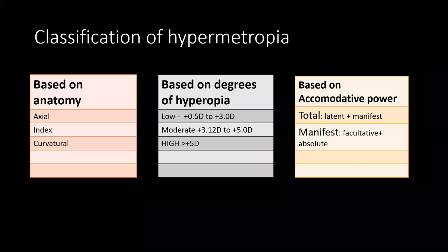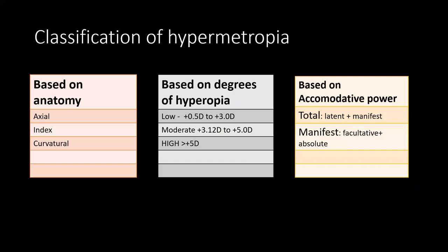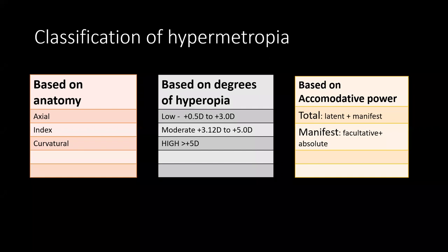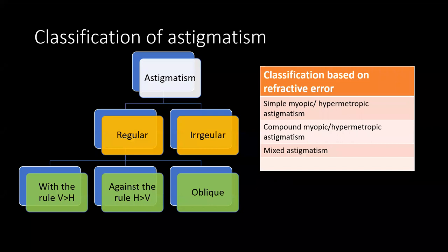Classification of hypermetropia: based on anatomy — axial, index, curvature. Degrees: plus 0.5 to plus 3 is low, plus 3.25 is moderate, more than plus 5 is high. Based on accommodative power: total, latent, and manifest — manifest being facultative (child corrects with accommodation) and absolute (cannot be corrected by accommodation). Astigmatism: regular (with-the-rule, against-the-rule, oblique — e.g., 45 and 135 degrees) and irregular.